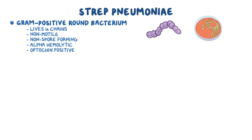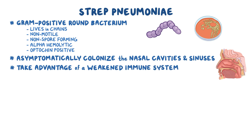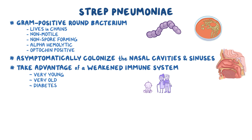These bacteria are found asymptomatically colonizing the nasal cavities and sinuses, but they can take advantage of a weakened immune system, especially in very young or very old individuals, or in those with diabetes, HIV infection, cancer, splenectomy, or those with sickle cell disease.